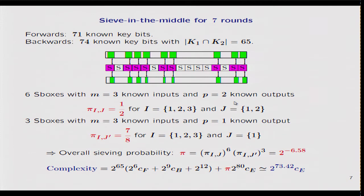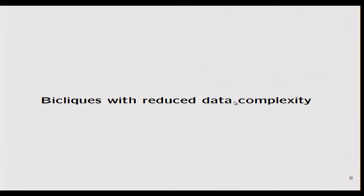This was for seven rounds. We can also have an attack on eight rounds by adding a round at the end, which is covered by bicliques. The time complexity is not changed, but the data complexity increases from one to 64 pairs of plaintext and ciphertext. It is usually possible to combine the sieve-in-the-middle technique with the construction of bicliques, or short bicliques, in order to add one or two rounds, but the problem is that it usually increases the data complexity.